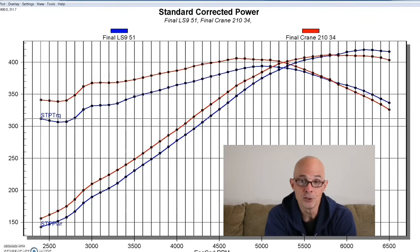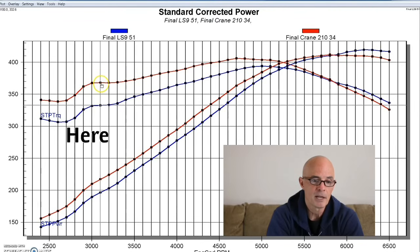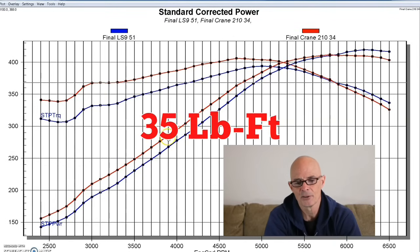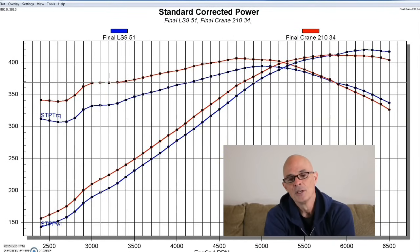But this is our comparison between a 210 Crane cam and the 211 degree duration LS9 cam. As you can see, the LS9 cam is a lot softer down low. As a matter of fact, through most of the curve, it loses a substantial amount of torque below, let's say, 5,000 RPM, and a lot down low. I mean, down here in the 2,500 to 3,000 range, we're talking about 333 foot-pounds versus 368. So it's like 35 foot-pounds. It's quite a bit. So this is kind of what you can expect from a really wide lobe separation angle cam.